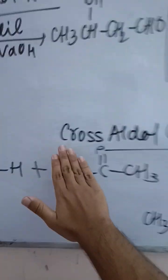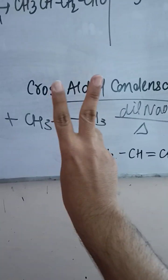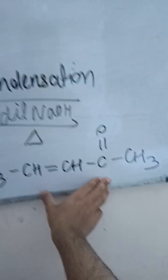Whereas in cross aldol condensation, two different aldehydes or ketones react with each other in the presence of dilute NaOH and heat to form four products: two self-products and two cross products, one of the cross products I've mentioned over here as you can see.